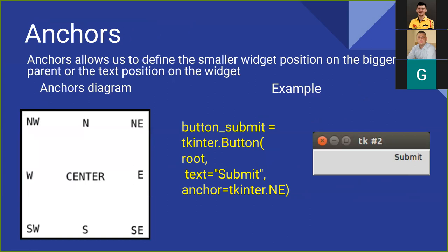The tkinter module defines a number of anchor constants you can use to control where items are positioned relative to their context — for example, where a widget is located inside a frame when the frame is bigger than the widget. These constants are given as compass points where north is up and west is to the left. The anchor constants are shown in a diagram. Anchors are also used to define where text is positioned relative to a reference point. For example, we create a button with the text 'Submit' and pass an anchor parameter equal to NE (northeast), and the submit text is located in the top-right corner.